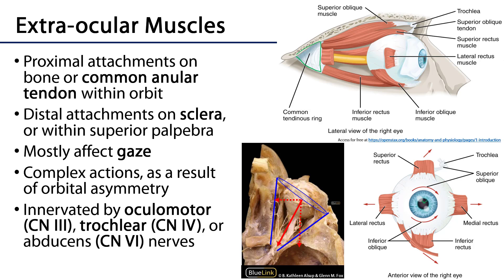Their actions can sometimes be rather complex, and that's the result of orbital asymmetry. Recall that the orbit is a pyramid with its long axis directed posteromedially. This means that some muscles, such as the superior rectus, when they contract will have both a posterior vector and a medial vector. The rectus muscles will often adduct or move gaze inwards because of that. The oblique muscles — superior and inferior oblique — will have lateral components to their vectors which will abduct gaze.